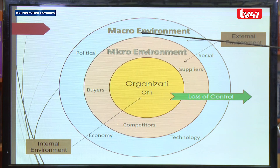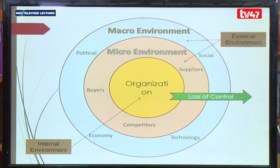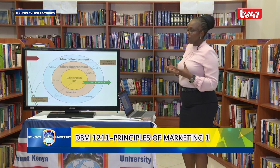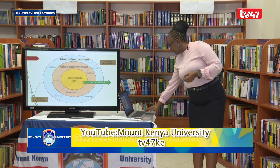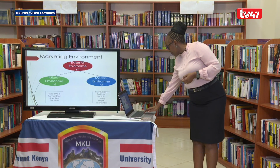The larger environment — the macro environment — is what we say is uncontrollable, because we do not know what tomorrow holds. For example, most people are currently at home because of the pandemic — this is not something we had foreseen, it's beyond our control.